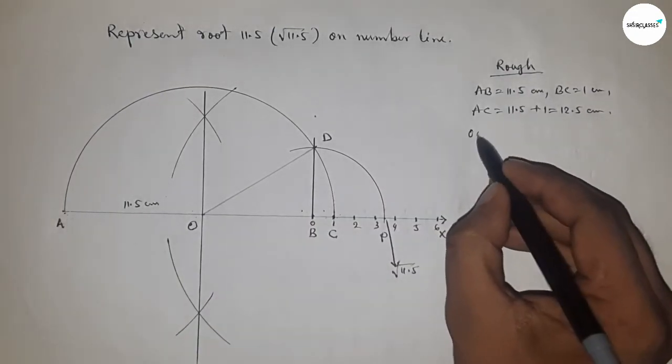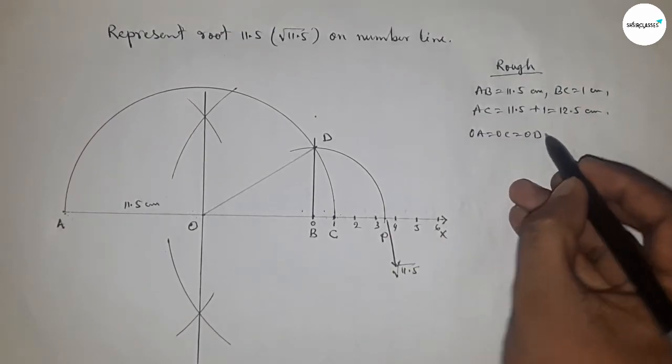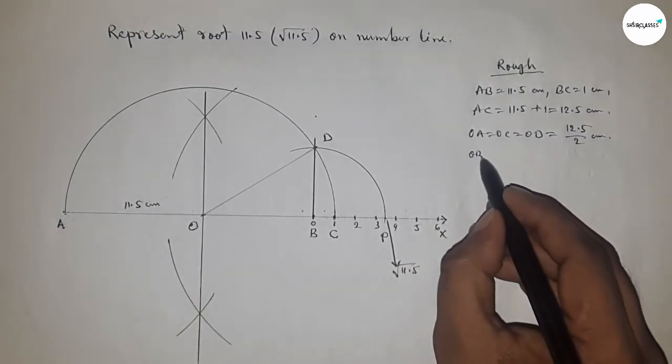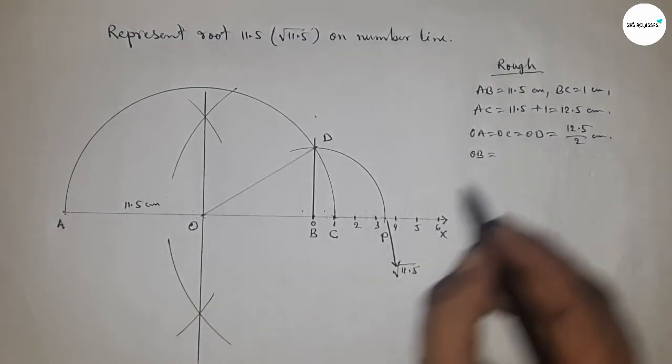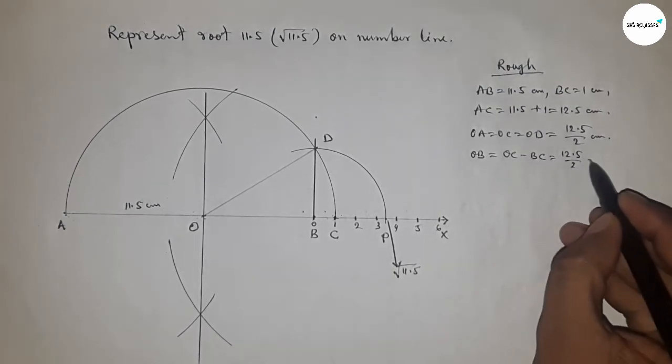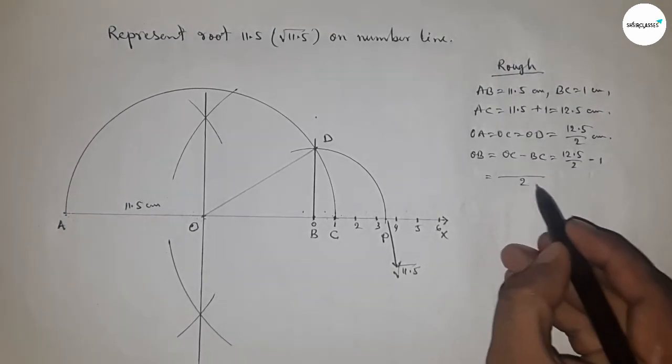The radius OA, OC, and OD equal 12.5 divided by 2 centimeters. Now distance OB equals OC minus BC. Putting the values of OC and BC and calculating this, we get 10.5 divided by 2 centimeters.